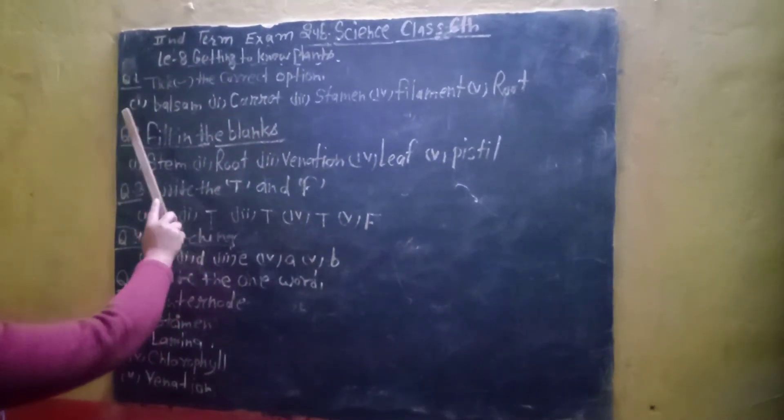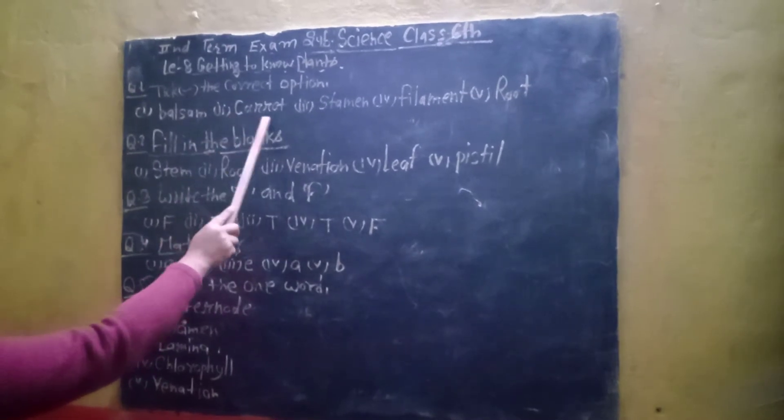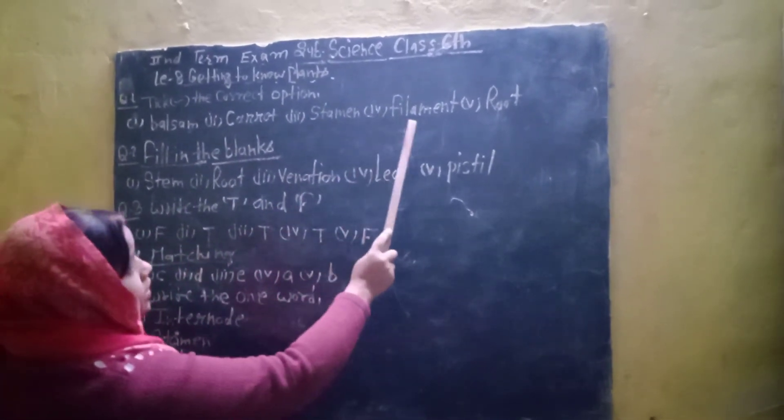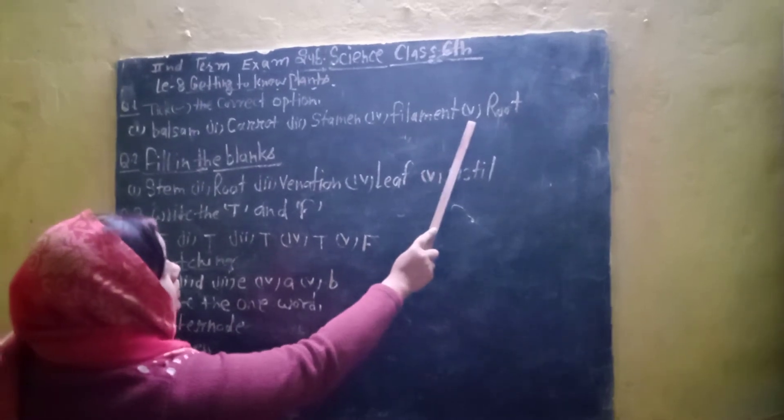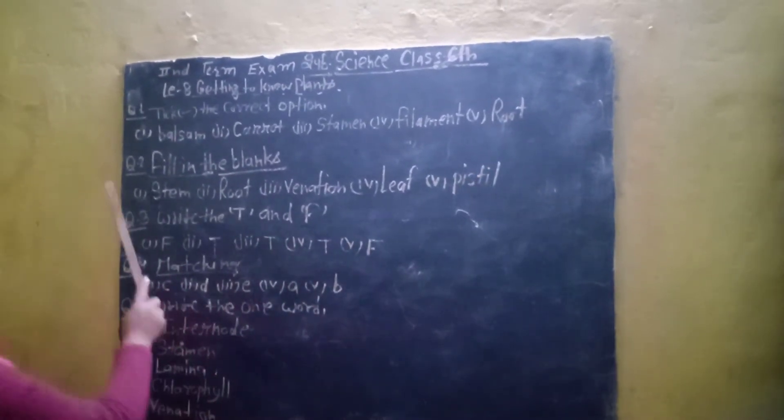Question No. 1 Take the Correct Option. First Me Hulsan, Second Me Carrot, Third Me Stemming, Four Me Filament, And Five Me Root.